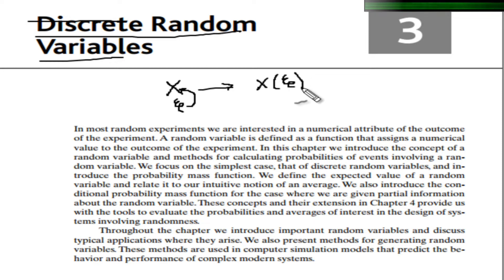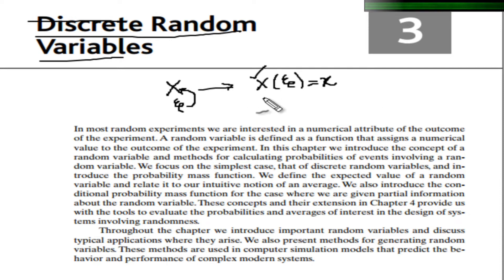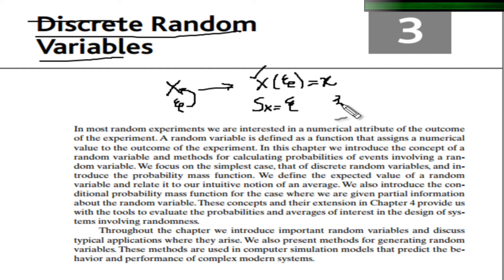The value that X returns is called small x. From where does it get all these values? It gets them from a set called S_X, which contains all the numerical values. These numerical values come from another set S, which is the sample space of the random experiment.